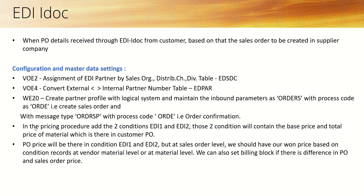After these first three settings, the next setting comes at the level of the pricing procedure. In the sales order, the pricing procedure which you are using — in that you have to add two conditions: EDI1 and EDI2. Those two conditions will contain the base price and total price of material which is in the customer purchase order. The PO price will be there in this condition, but the sales price in the sales order will come based on our sales configuration. EDI1 and EDI2 price will be there just for reference, and if you want to do a billing block if the price is not the same, that is also possible. All this setting we have to do in the receiver system for creating the sales order.